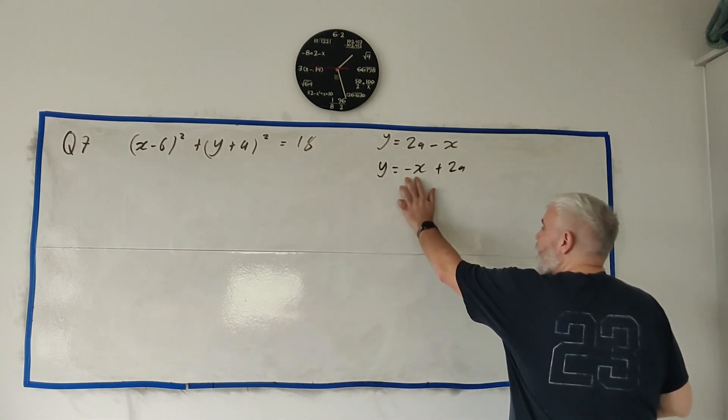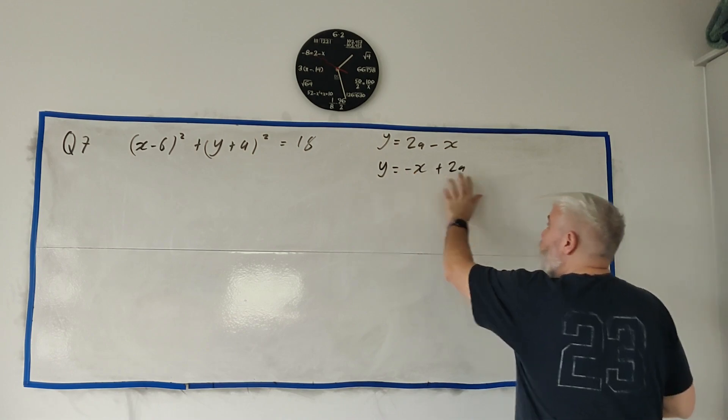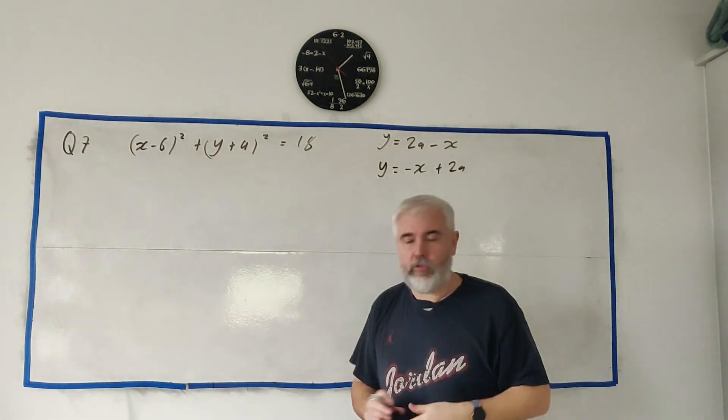Y is equal minus X plus 2A. Much better way to look at it. It's more usual, we know the slope is now minus 1, the y-intercept is 2A if that becomes useful.